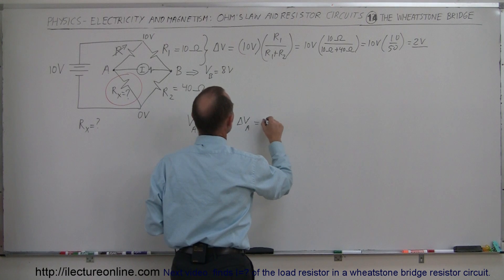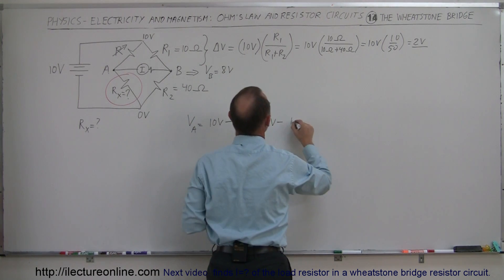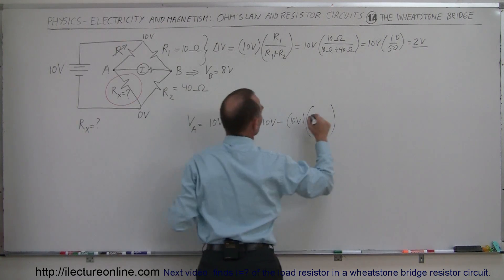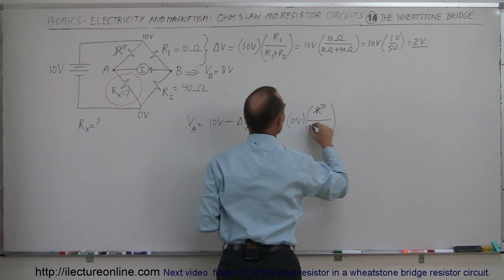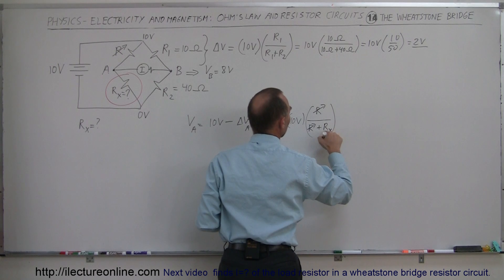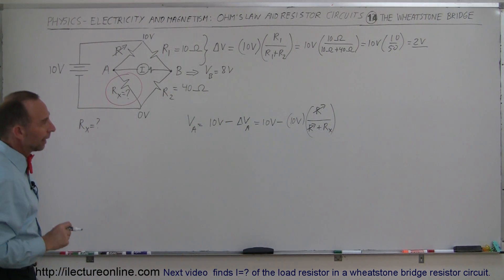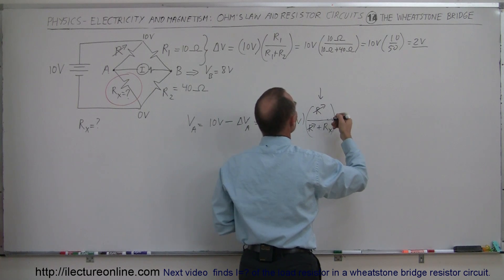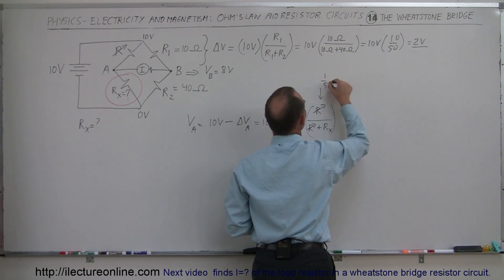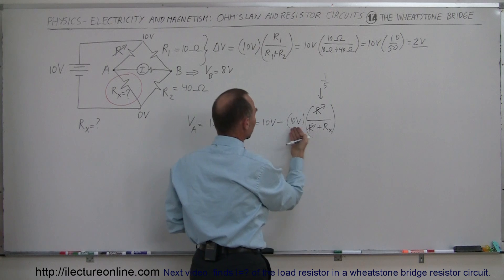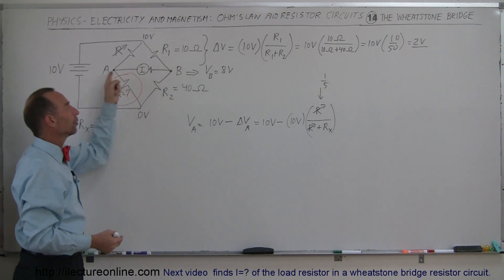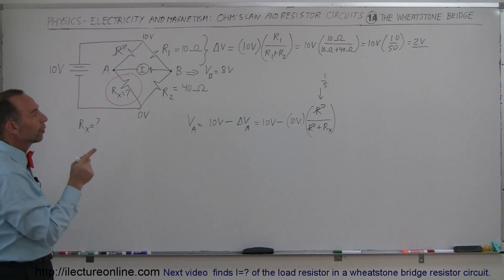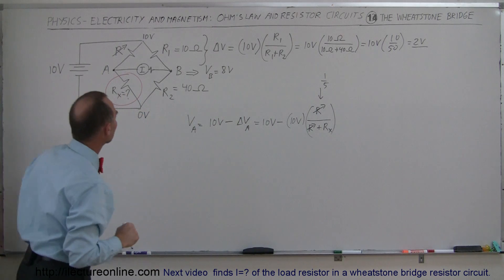So delta VA would be 10 volts times the ratio of the variable resistor divided by the variable resistor plus the unknown resistor. For this to equal 2 volts, we need that ratio to be one-fifth — the same ratio we had on the right side. If this portion equals one-fifth, then 10 volts times one-fifth is 2 volts, and 10 volts minus 2 volts is 8 volts, so A will be at the same potential as B, and there will be no current measured by the sensitive current meter on the Wheatstone Bridge.